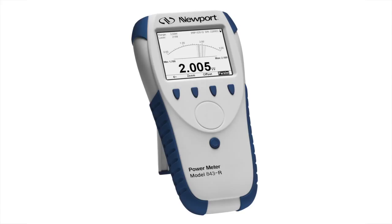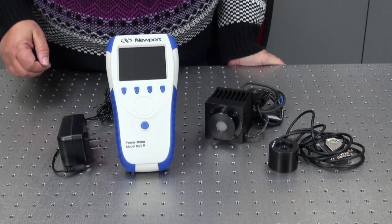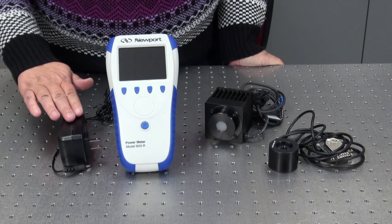The 843-R is a low-cost, easy-to-use power meter that is capable of measuring from picowatts to watts. It comes supplied with a built-in rechargeable battery and a charger that is also a power supply.